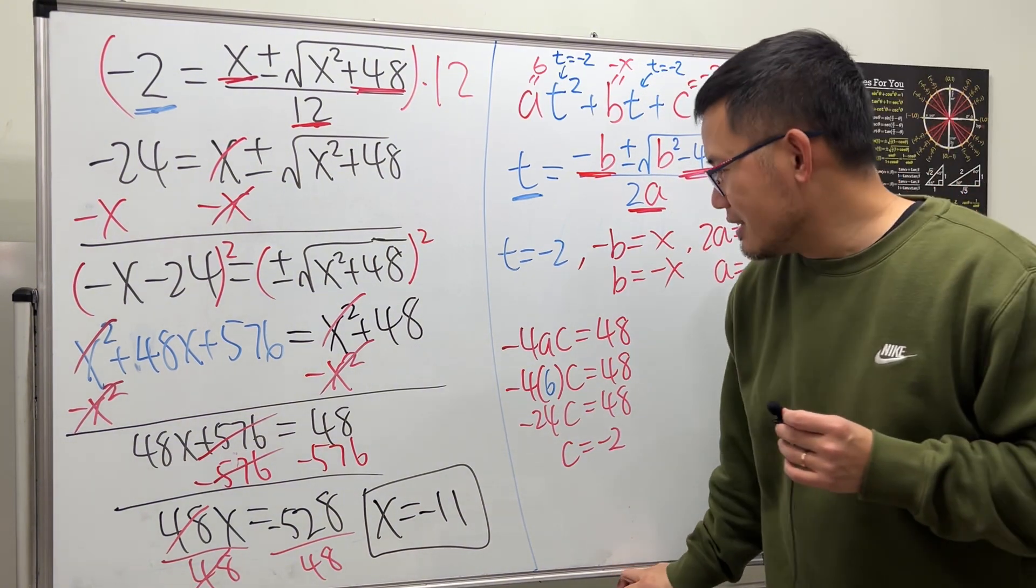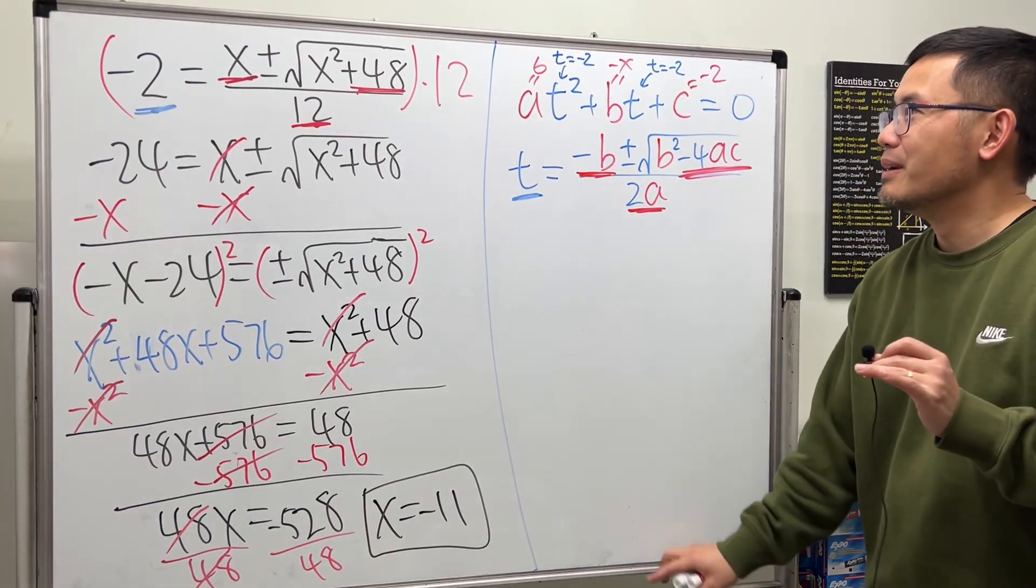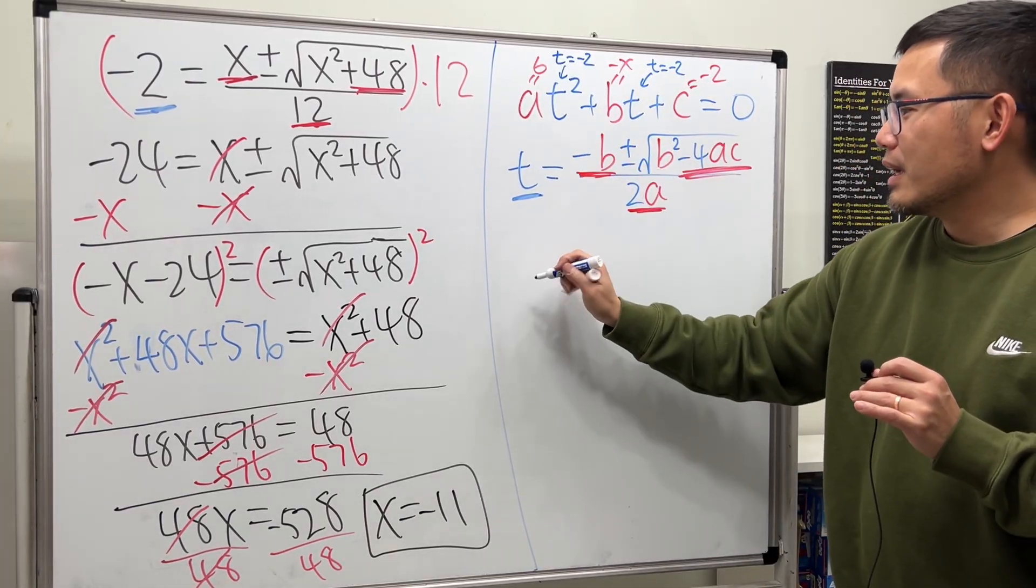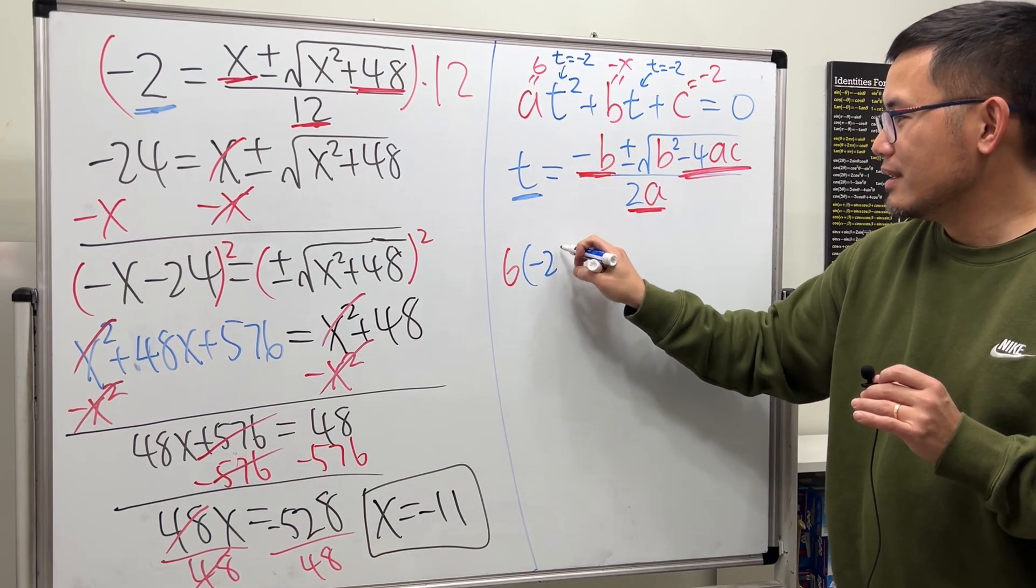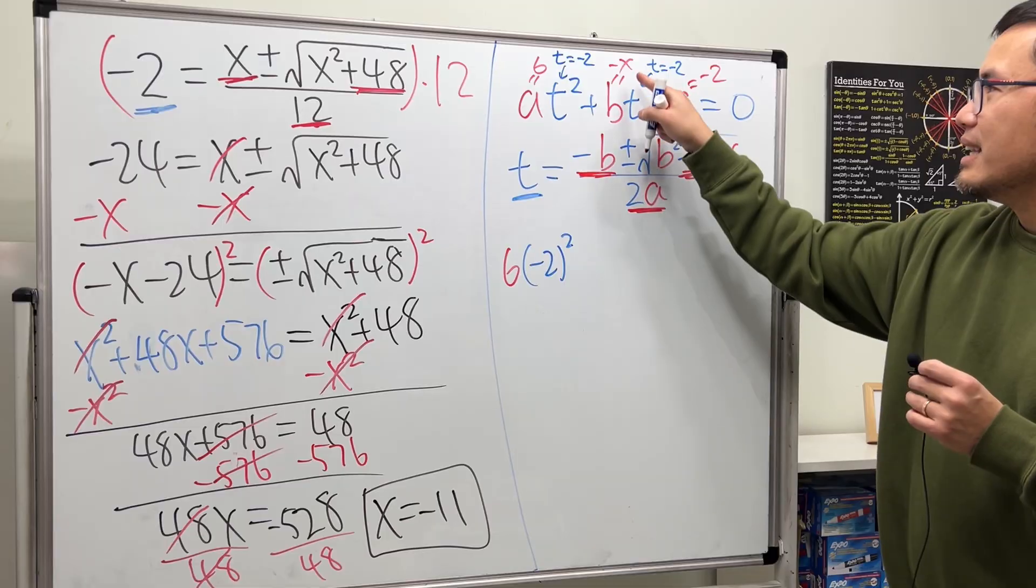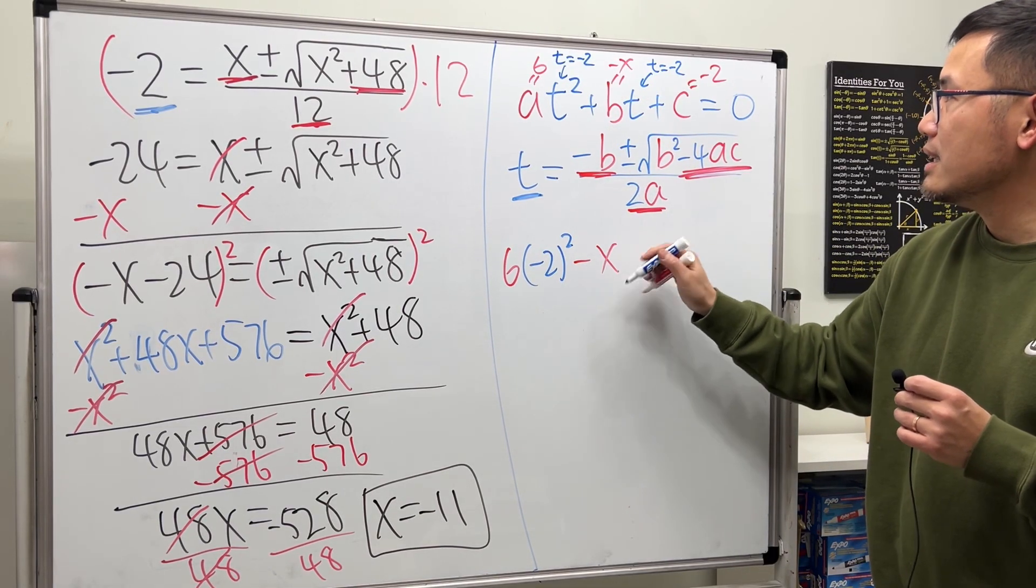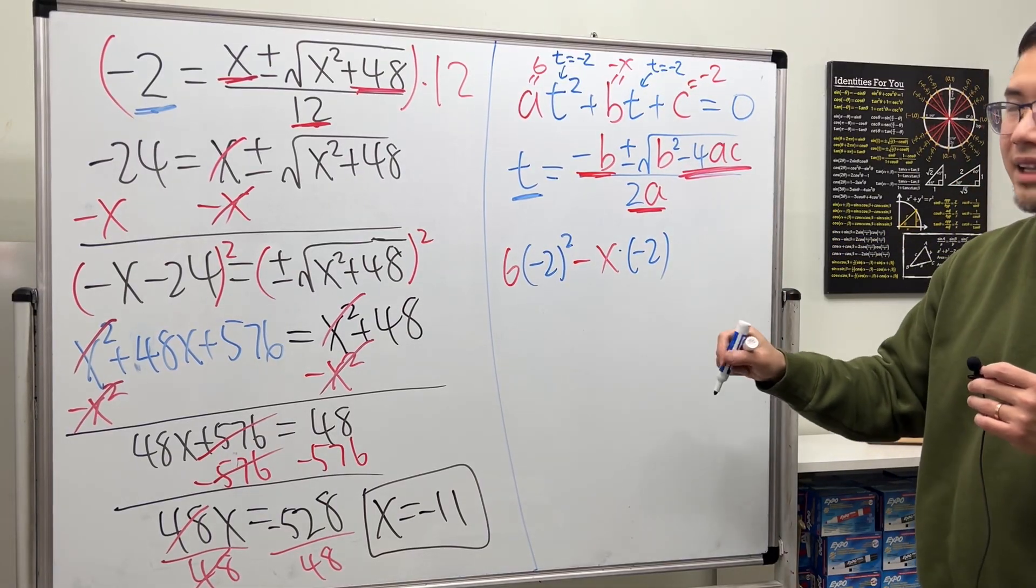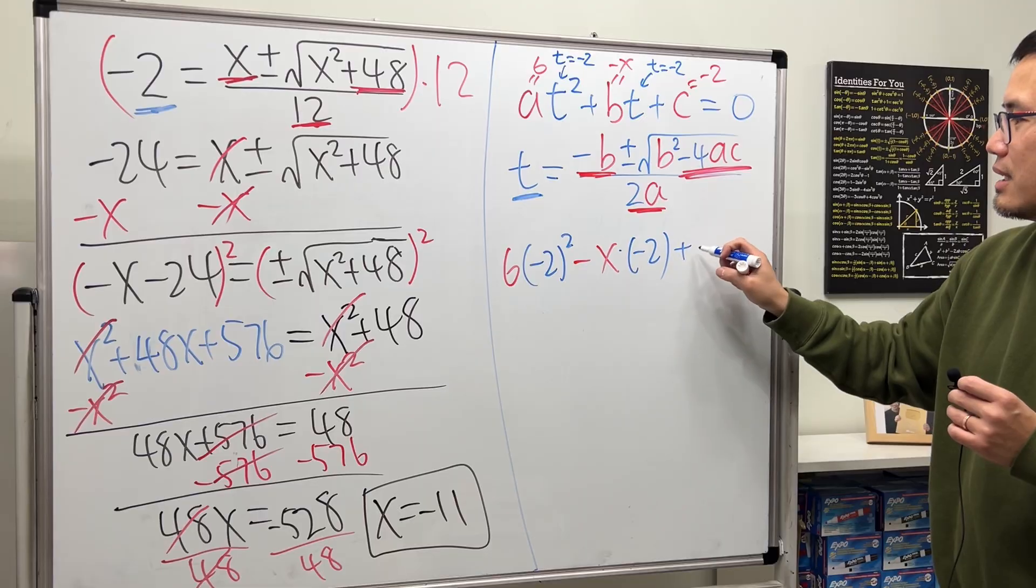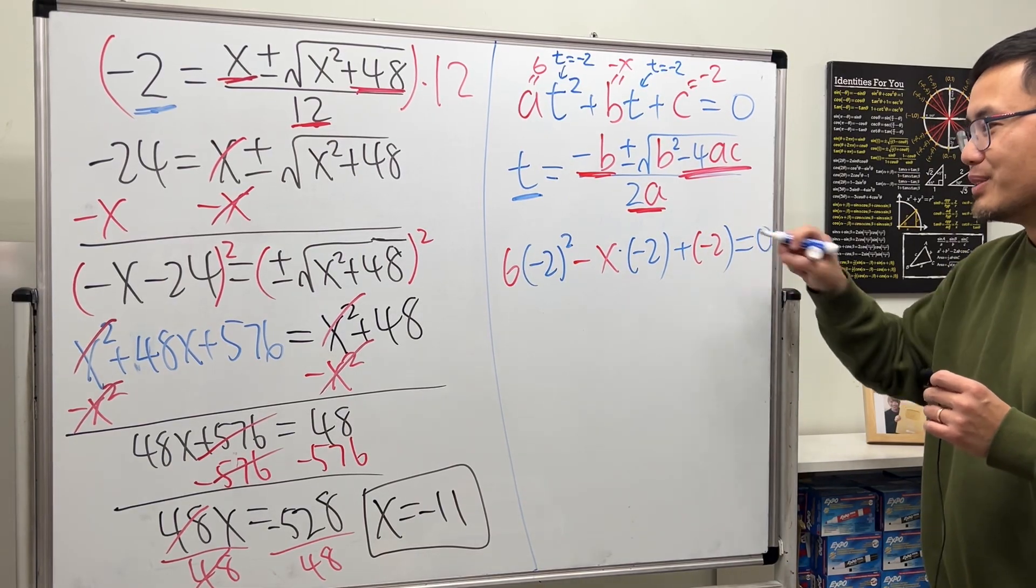So, that being said, we can write down a very nice equation based on this. So, have a look. We have 6 times t is negative 2. And you square that. And then, b is negative x. So, we will have minus x times t is negative 2. And then, c is negative 2. So, plus negative 2. All that has to be equal to 0.